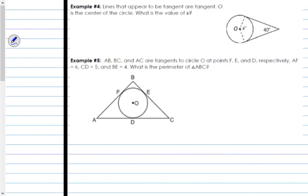Example number 4. Lines that appear to be tangent are tangent. You will see this verbiage in a lot of problems. They're letting you know that even though they didn't draw the right angle to show they're perpendicular, if the lines look like they're tangent, consider them to be tangents. So, lines that appear to be tangent are tangent. O is the center of the circle. What is the value of X?